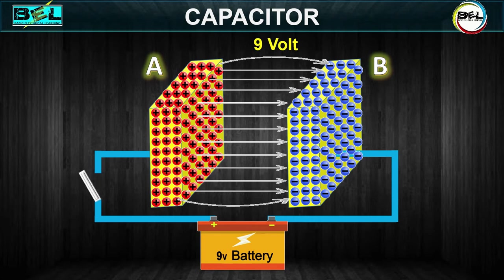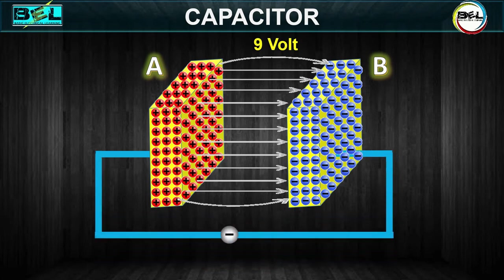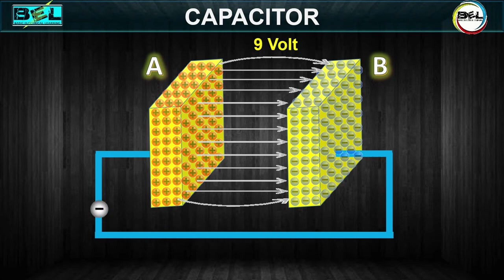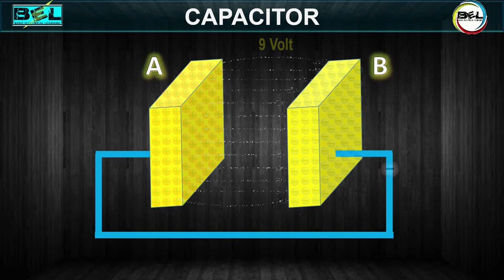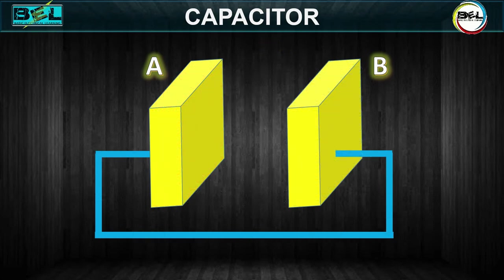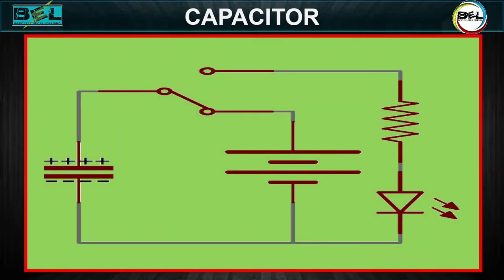If the switch is opened, the plates remain charged. Once the capacitor is shorted, it will discharge quickly. It should be clear that during the time the capacitor is being charged or discharged, there is current in the circuit. Current is present only during the time of charge and discharge, and this period of time is usually short.